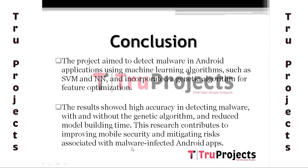The project aimed to address the issue of malware in Android applications by using machine learning algorithms for detection. To protect users, machine learning algorithms including Support Vector Machines and Neural Networks were integrated with genetic algorithm for feature optimization. The results showed SVM and neural network without genetic algorithm achieved high accuracy in detecting malware. Additionally, the genetic algorithm helps reduce the execution time for model building. This ML approach contributes to enhancing mobile security and mitigating the risk associated with malware-infected Android apps.